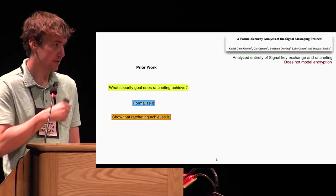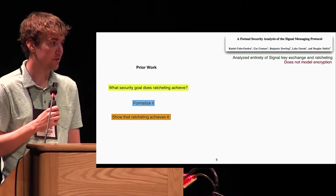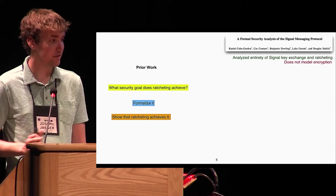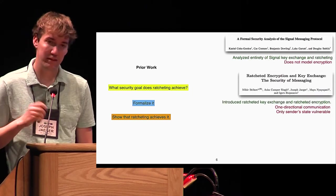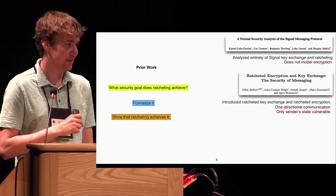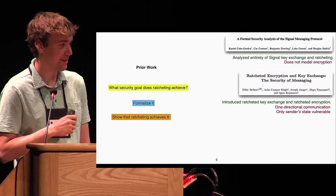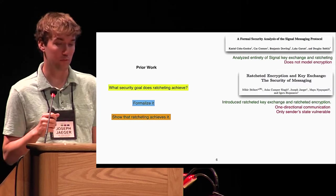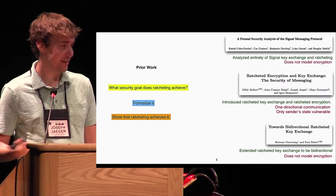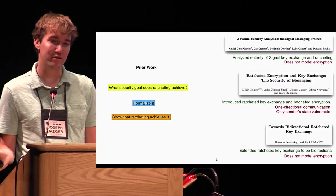A first example of this was by CCDGS, which looked at the particular ratcheting used by Signal, analyzed the entirety of their key exchange, but did not model encryption at all. Last year at Crypto, there's a paper I was a co-author on, which introduced as separate primitives ratcheting key exchange and ratcheting encryption, but as we just heard, the important limitation of that was we only considered communication in one direction. And finally, the talk we just heard about bidirectional ratcheting, which extended this previous work, but did not specifically model encryption.